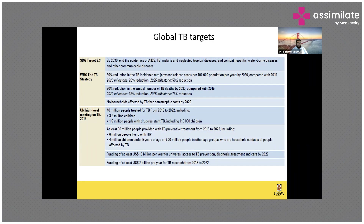We had a Sustainable Development Goal target, and now that has been revised to the WHO End TB Strategy. What they want to do is have an 80% reduction in TB incidence rate by 2030 and a 90% reduction in the annual number of TB deaths by 2030. That's the goal they have kept.